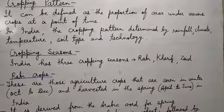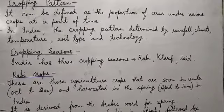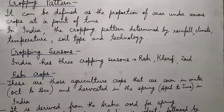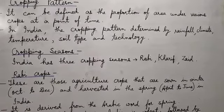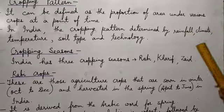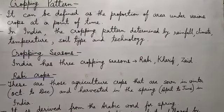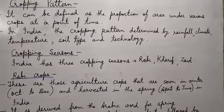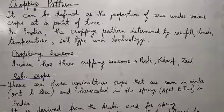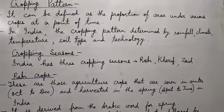Cropping pattern in India is a dynamic concept because it changes over space and time. It is a yearly sequence and a spatial arrangement of sowing and fallow on a given area. In India, the cropping pattern is mainly determined by rainfall, climate, temperature, soil type, and technology. The cropping pattern can be presented by taking the major crops as a base crop and considering all possible alternative crops. For example, wheat, barley, and oats are taken as one category.